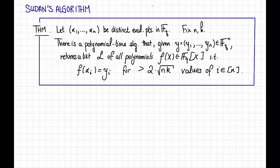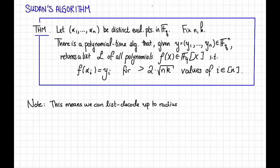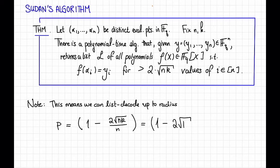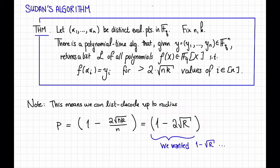Before we see the algorithm or prove the theorem, let's parse this expression. This doesn't quite get us to the Johnson bound, but it gets us somewhat close. In particular, we can list decode up to a radius rho equal to 1 minus 2 times the square root of nk divided by n, which equals 1 minus 2 times the square root of R, where R equals k over n is the rate of the Reed-Solomon code. Recall that the Johnson bound gives radius 1 minus the square root of R — so we'll take this for now, and in the next video we'll see how to improve on it.